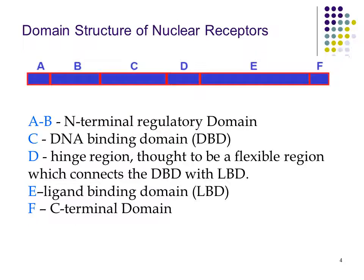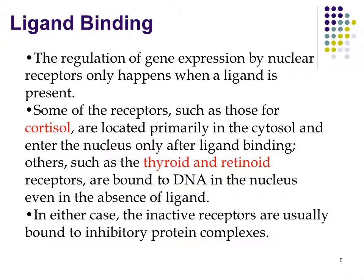The domain structure of the nuclear receptor is as follows: A and B are the N-terminal regulatory domains, while C is the DNA binding domain, and D is the hinge region, thought to be a flexible region which connects the DNA binding domain with the ligand binding domain. E is the ligand binding domain, and F is the C-terminal domain.